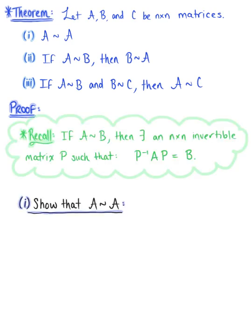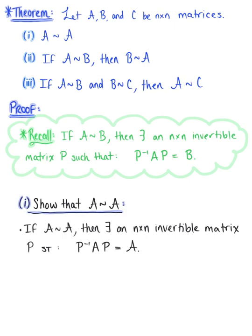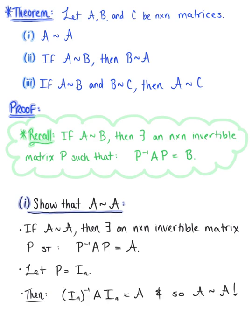For Property 1, we want to show that matrix A is similar to matrix A. If matrix A is similar to matrix A, then by definition there exists an n by n invertible matrix P such that the inverse of P times A times P equals matrix A. So let's let matrix P be the n by n identity matrix. Then the inverse of the identity times A times the identity equals matrix A, and so A is similar to A, which ends our proof.